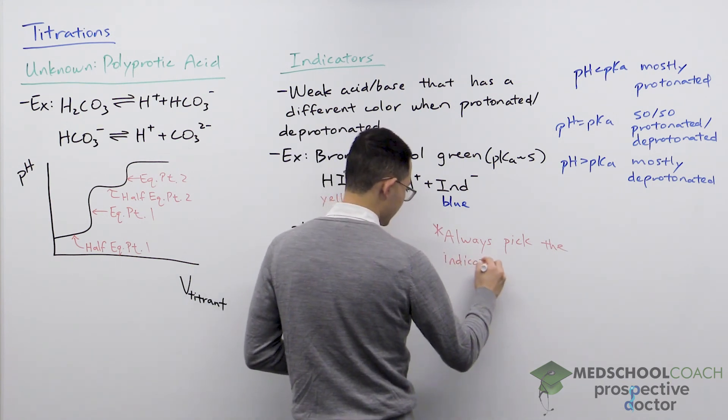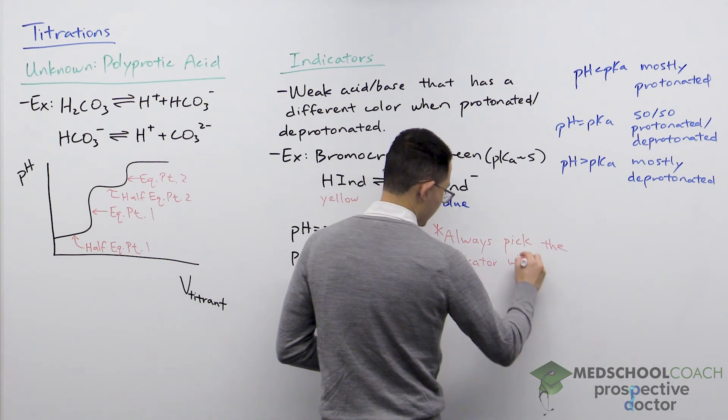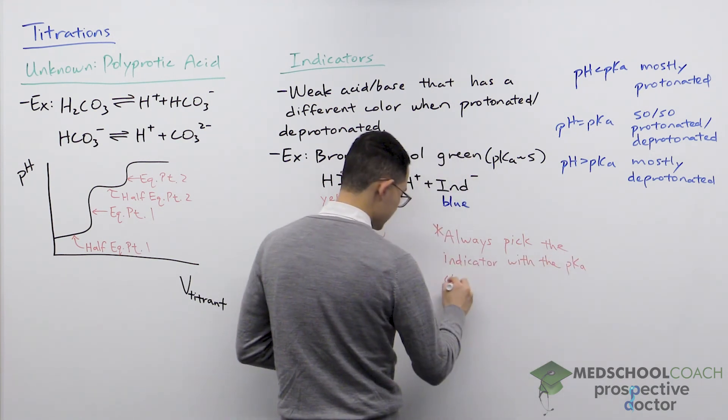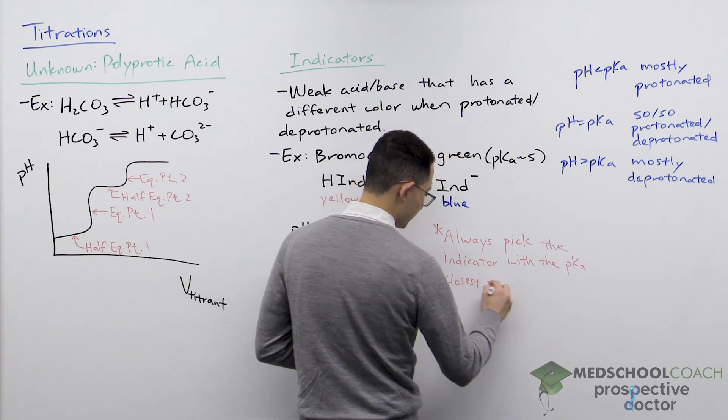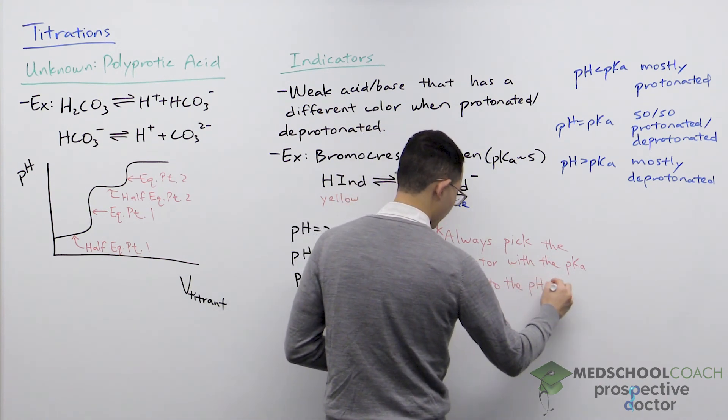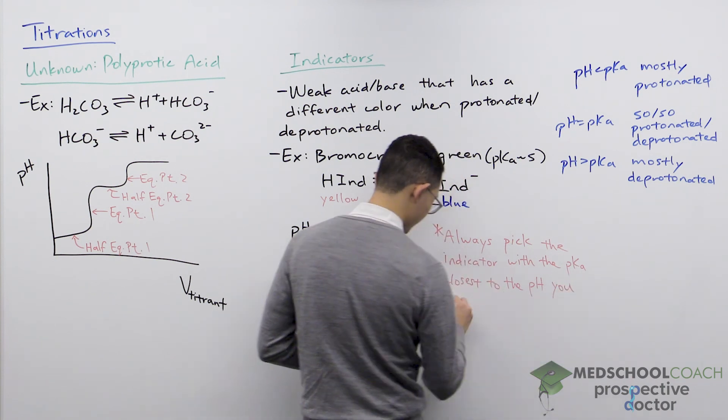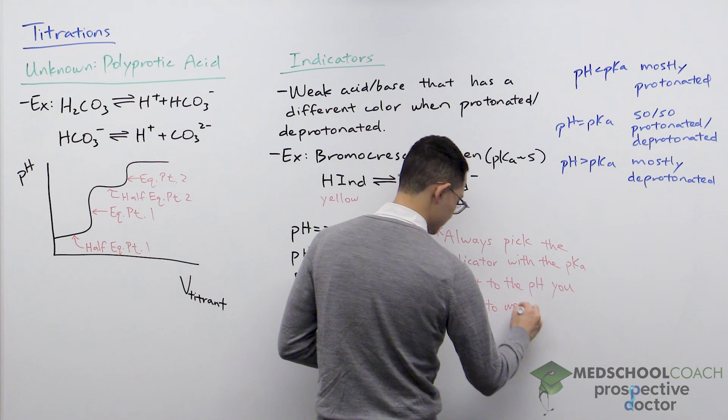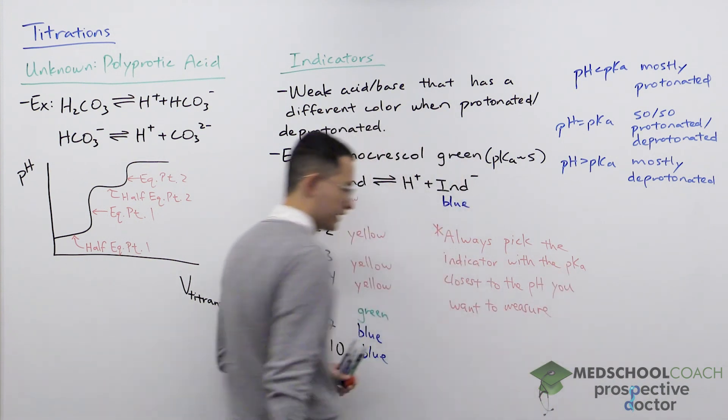So always pick the indicator with the pKa closest to the pH you want to measure. And that's it for indicators.